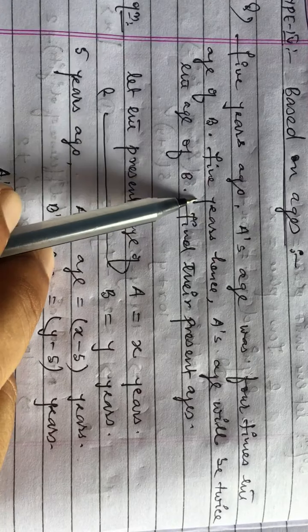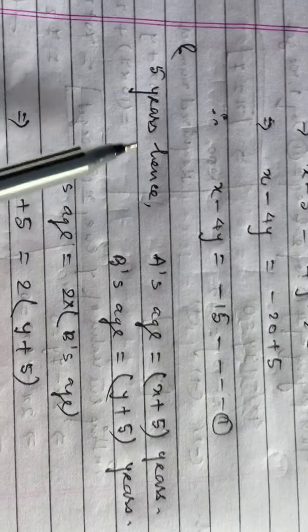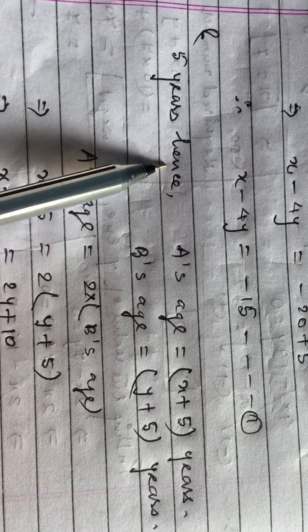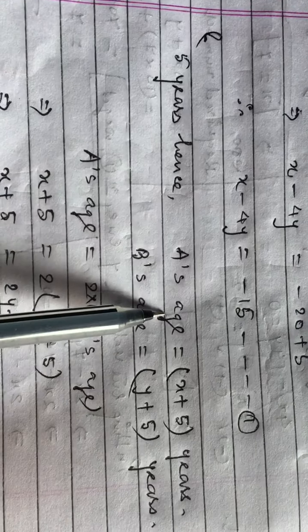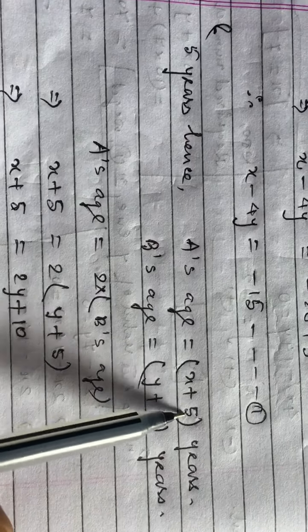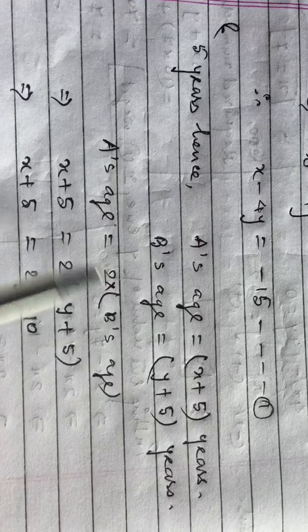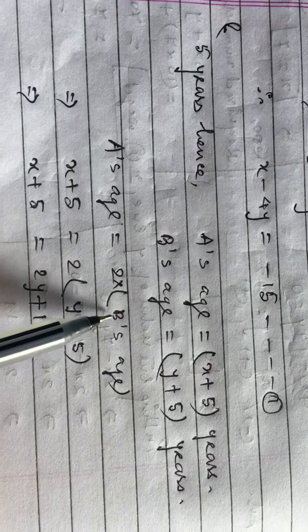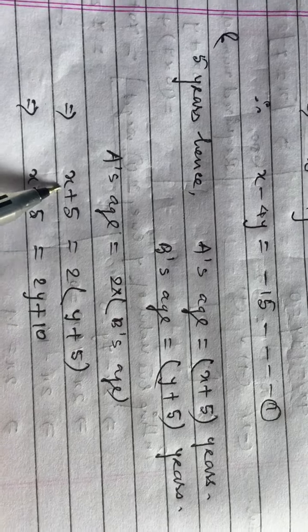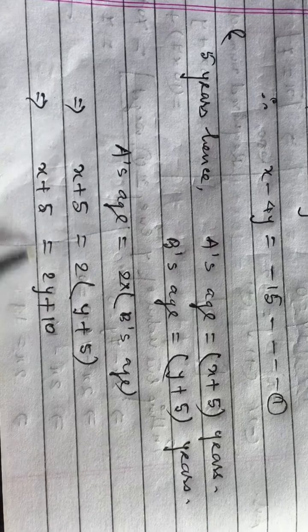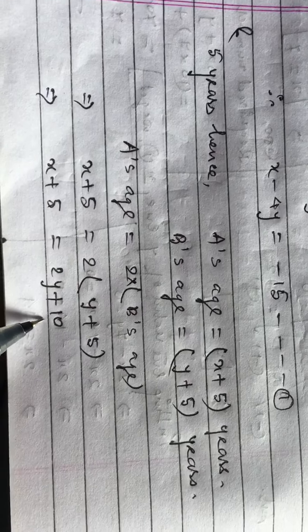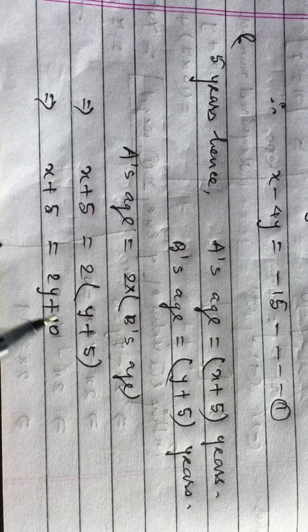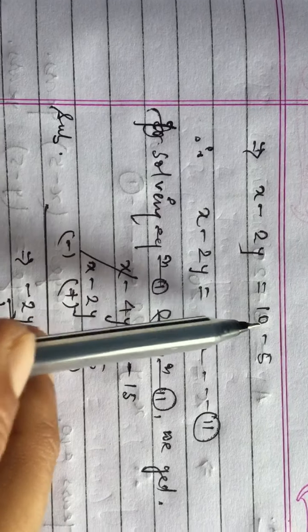One more condition: five years hence, A's age will be twice the age of B. 'Hence' means after, so A's age after 5 years is x plus 5, and B's age is y plus 5. A's age is twice B's age, so x plus 5 = 2(y plus 5). Expanding: x plus 5 = 2y plus 10. Taking terms to one side: x minus 2y equals 10 minus 5, which gives x minus 2y = 5. This is the second equation.